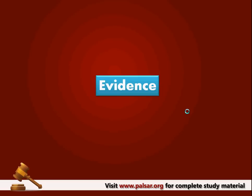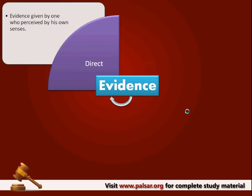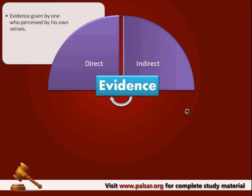Under our Evidence Act we see different kinds of evidence — that is, direct evidence and indirect evidence. Direct evidence means evidence given by a person having perceived by his own senses; he has first-hand knowledge about the fact he is speaking. Section 60 expressly says that all facts must be proved by way of direct evidence, not by any other mode of evidence.